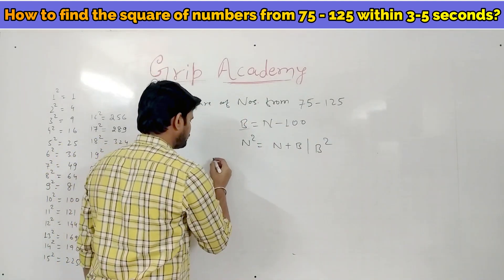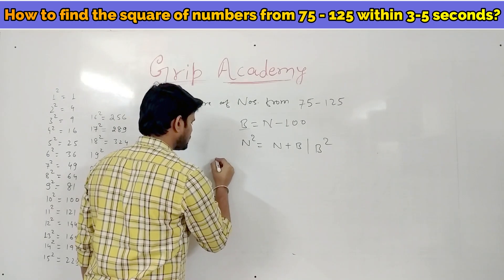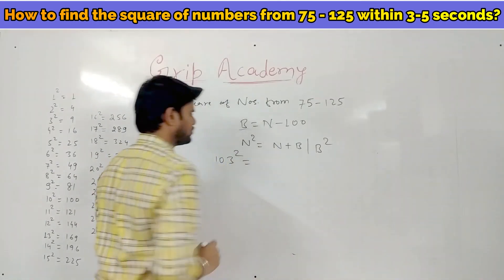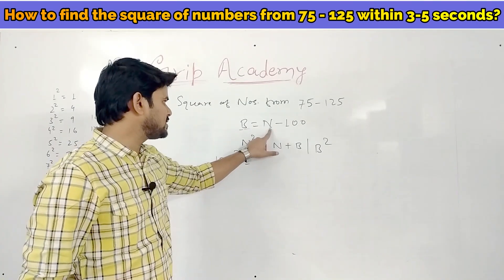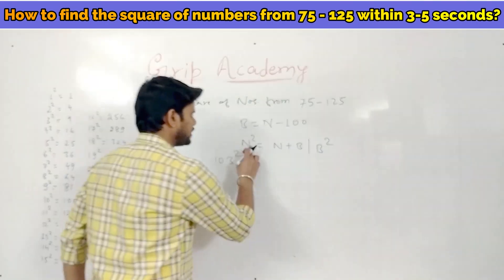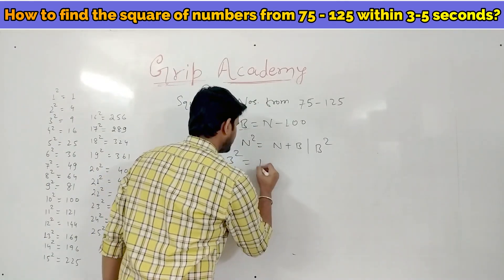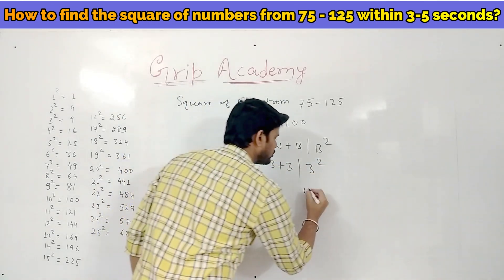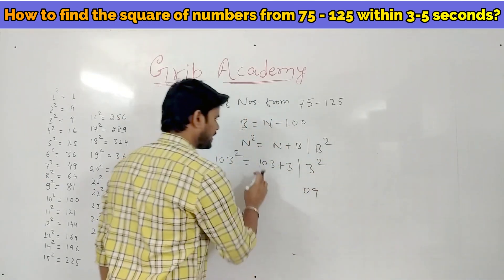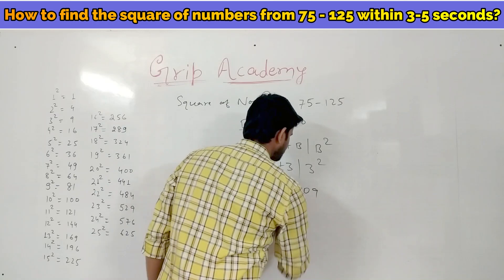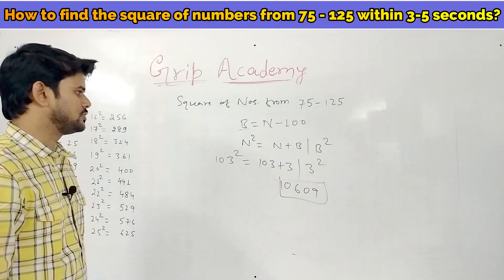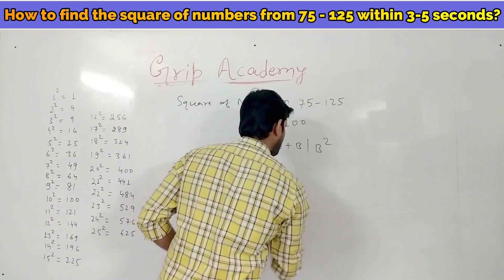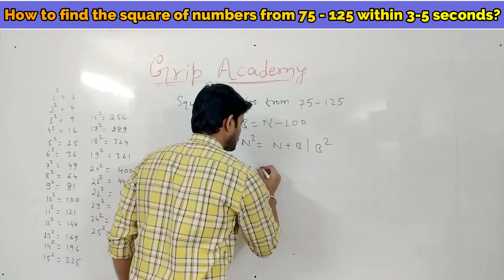Let's find the square of 103. Base is 103 minus 100 equals 3. So n squared is given by 103 plus 3, slash 3 squared. 3 squared is 9, written as 09. 103 plus 3 is 106. So the answer is 10609.